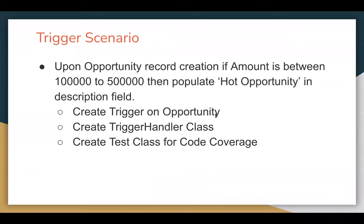Let's understand the trigger scenario first, then I will demonstrate how you can implement it. Upon opportunity record creation, if the amount is between 100K to 500K, then we need to populate 'Hot Opportunity' in the description field. We need to create a trigger on opportunity, then a handler class, and then a test class for code coverage. While creating the trigger, I will be using the before insert event because I don't need to apply any DML.